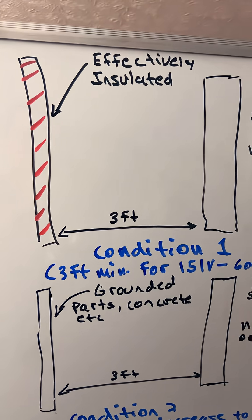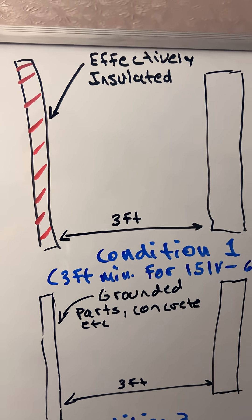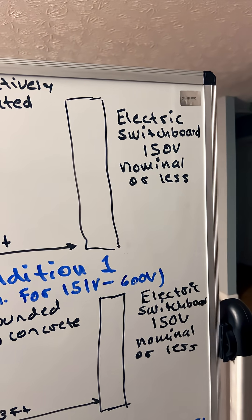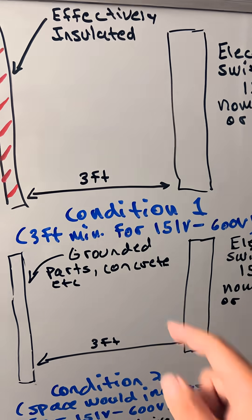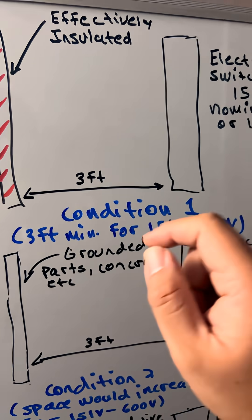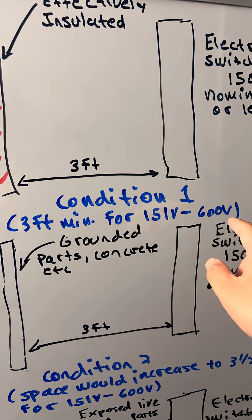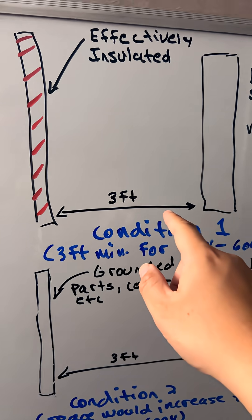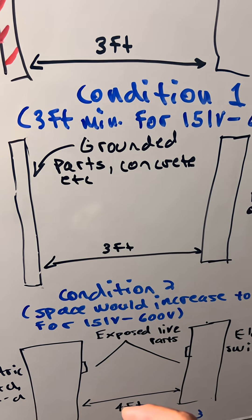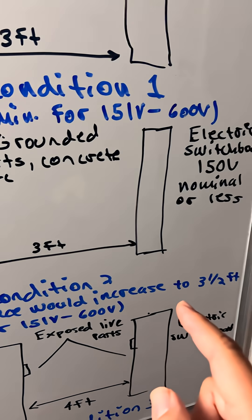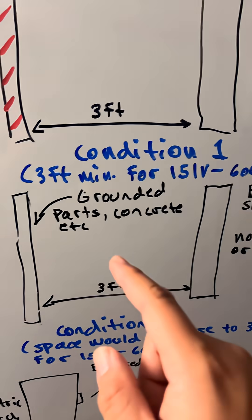As you can see here, on one side of the wall is the effectively insulated side, and on the other side we have the electric switchboard for 150 volts nominal or less. For condition 1, the minimum is 3 feet. For condition 2, the space increases to 3.5 feet for 151 volts to 600 volts.